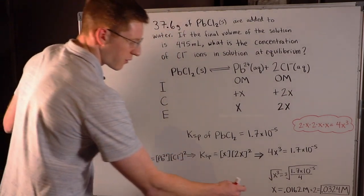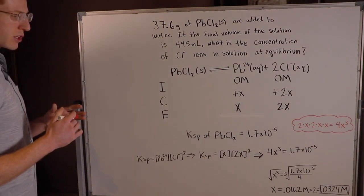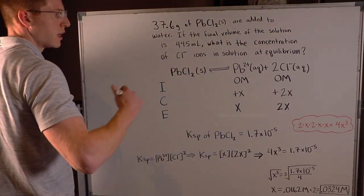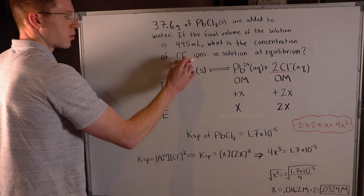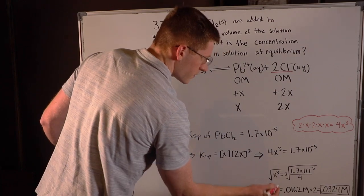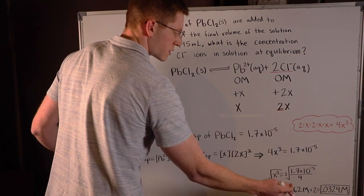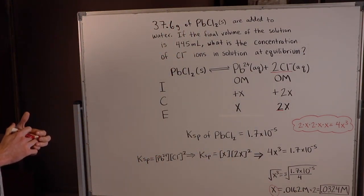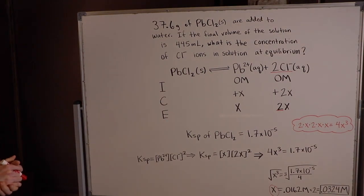I found that X equals 0.0162 molar. We have to multiply this by 2 because we're looking at the chloride concentration at equilibrium, and chloride has a stoichiometric coefficient of 2 — so its equilibrium concentration is 2X. Multiplying 0.0162 by 2, we find that at equilibrium the concentration of chloride ions in the solution is 0.0324 molar.